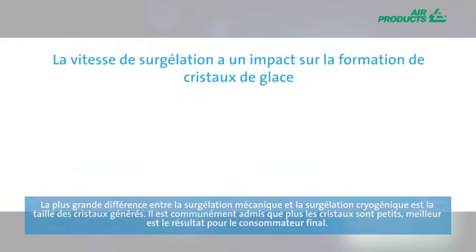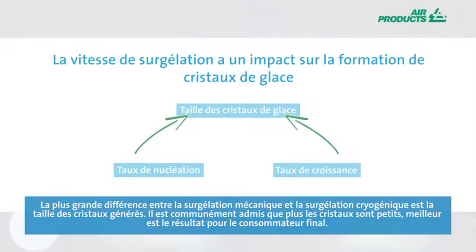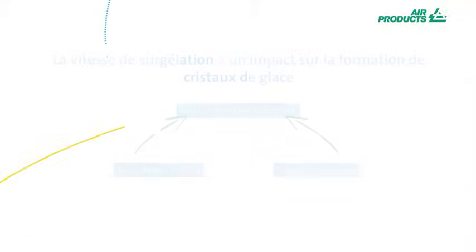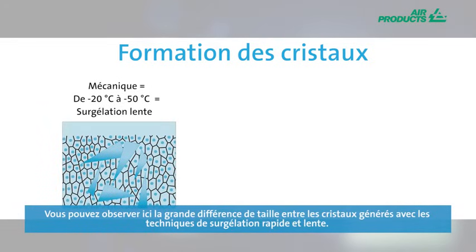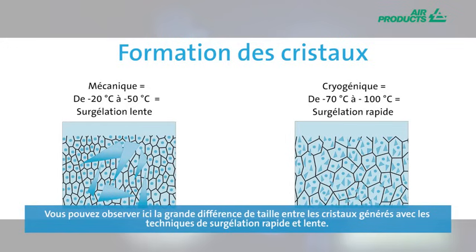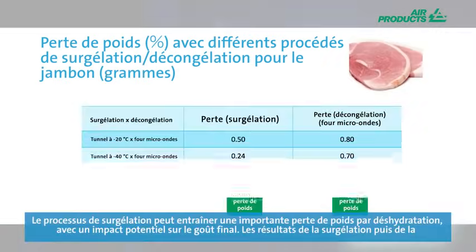The biggest difference between mechanical and cryogenic freezing is the crystal size generated. It's generally acknowledged that the smaller the crystal size, the better the end consumer experience. Here you can see the very different crystal size generation between faster and slower freezing techniques, with major ice crystal formation in the slower freeze technique.